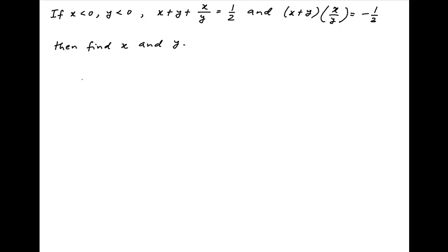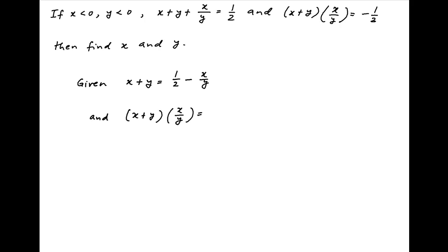The given equations can be written as: x plus y is equal to half minus x upon y, and x plus y times x upon y is equal to minus half. Let's denote these equations by 1 and 2 respectively.